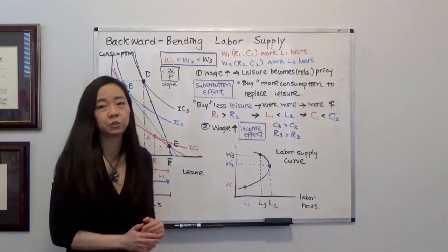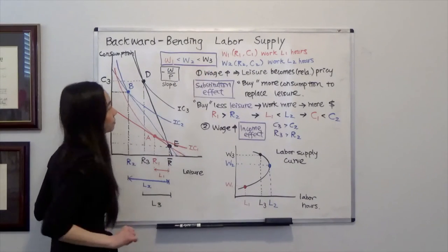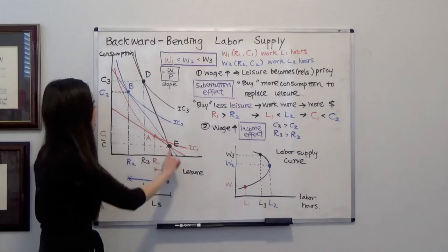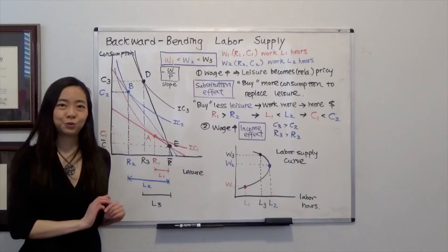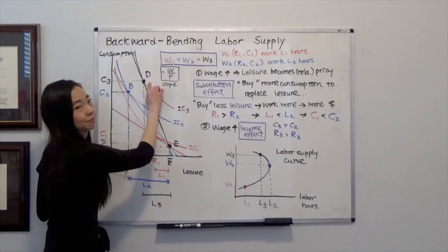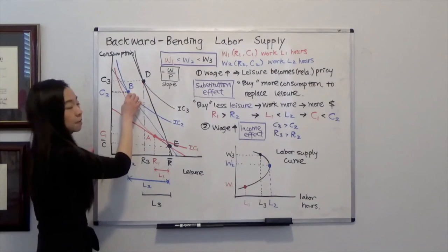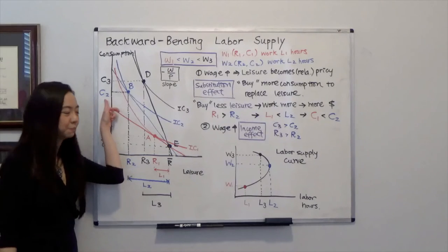Now, suppose our wage continues to increase from W2 to W3. Now, you can see our budget line is now a lot steeper than before. And you're going to choose point D. Notice at point D, you have more leisure than point B. You also have more consumption than point B.